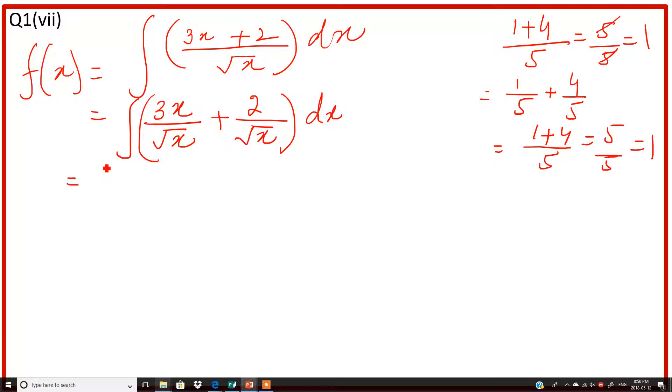In the next step we will take the denominator to the numerator. Under root x means x to the 1 over 2, but when it goes in the numerator the sign will be negative 1 over 2. Same thing we'll do for the next term, multiply by x to the negative 1 over 2 dx.